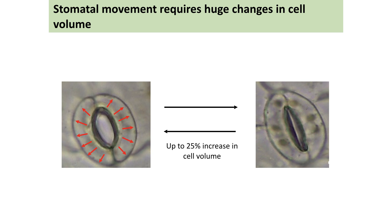During stomatal opening and closure there are massive changes in cell volume — going from the closed state to the open state can involve up to a 25% increase in cell volume. Guard cells experience about 10 times greater pressure than most plant cell types, and if other cells experienced these pressures they would simply burst because the cell wall is not designed to withstand such high pressure.